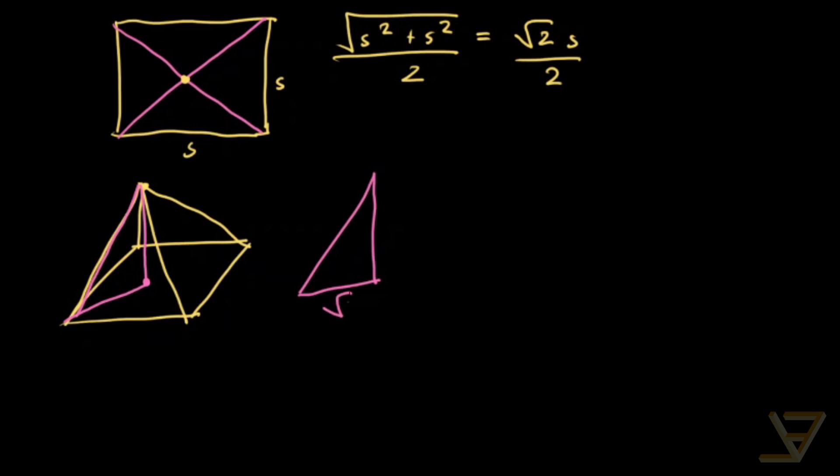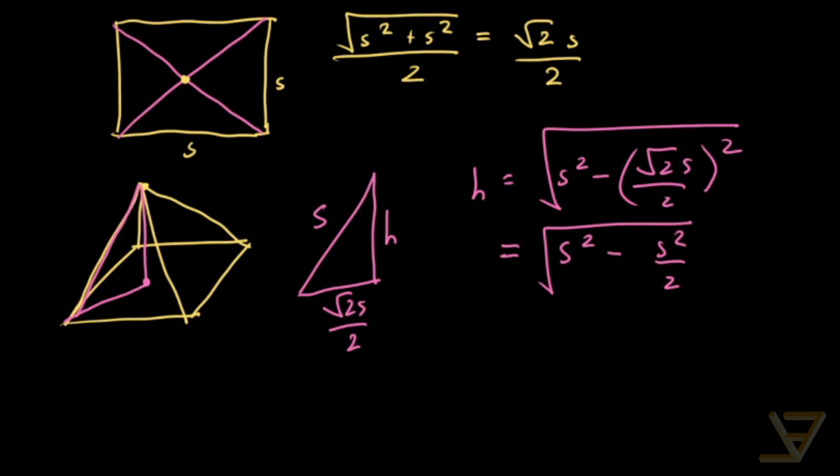We have square root of two s over two here. It's half the diagonal. We have the height here, and we have s over here. So the height is equal to square root of s squared minus square root of two s over two squared. And that is just equal to square root of s squared minus s squared over two, which equals square root of two over two s.